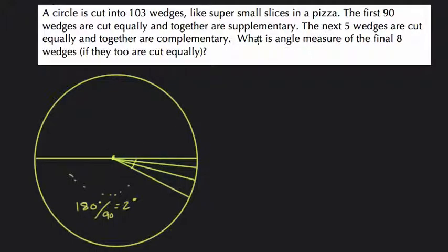They say then that the next 5 wedges are cut equally and together are complementary. So these next 5 pieces are larger and they take up 90 degrees. Complementary is, of course, 90 degrees.